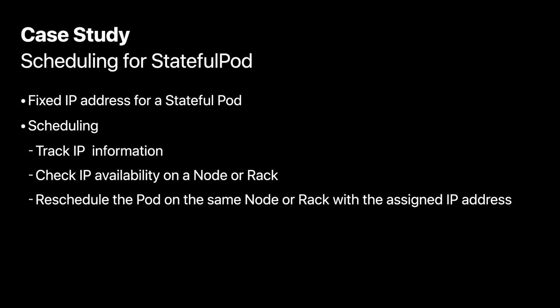During the filter stage of the scheduling decision — finding the feasible node — we have to check and make sure we assign the pod to the right node if it already has an IP address, or if there are still free or available IP addresses on a node.